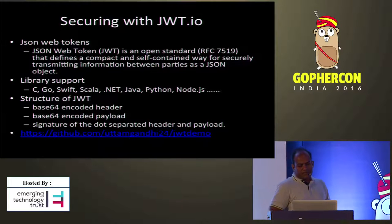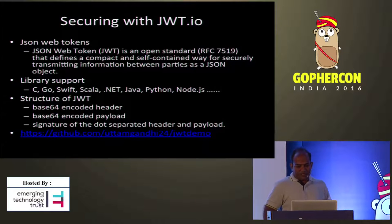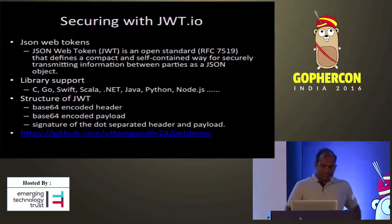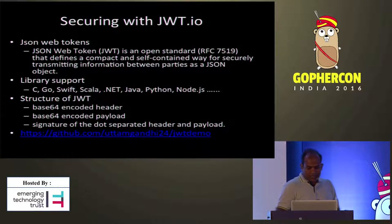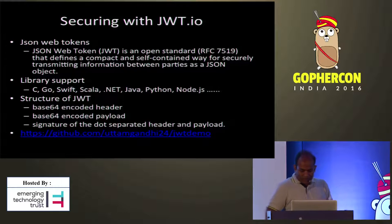JWT is JSON Web Tokens. It's an open standard — RFC 7519 — that defines a compact and self-contained way for securely transmitting information between parties as a JSON object. It has library support for many languages. JWT has a simple structure with three components: a header, a payload, and a signature, dot-separated.